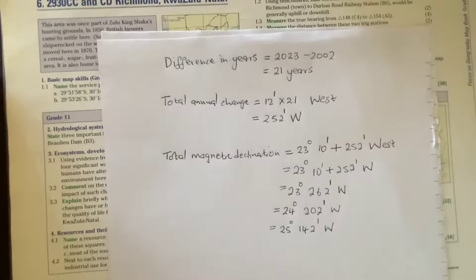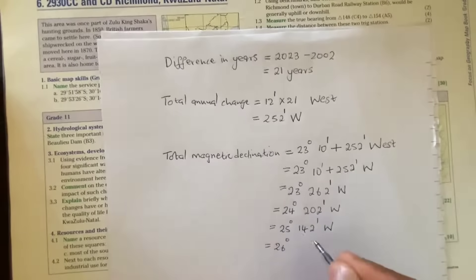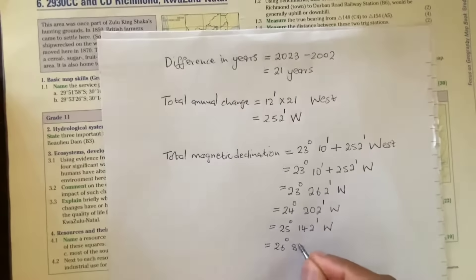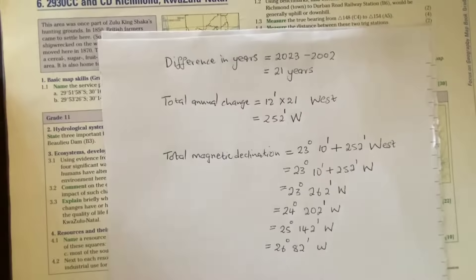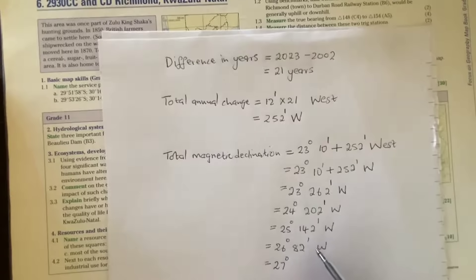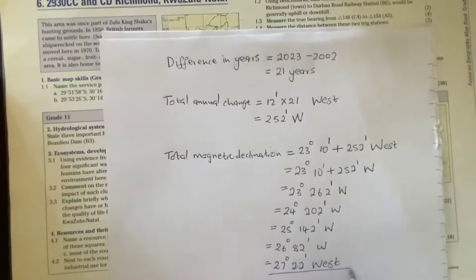Continuing to subtract 60: 142 minus 60 equals 82 minutes, giving us 26 degrees 82 minutes west. Still greater than 60, so: 82 minus 60 equals 22 minutes, giving us 27 degrees 22 minutes west. Your answer is complete.